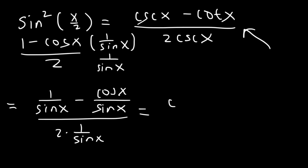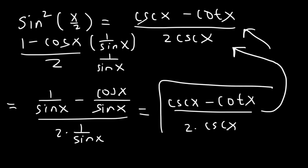1 over sine is cosecant. Cosine over sine is cotangent. And 2 times 1 over sine is 2 times cosecant. So now we've just verified the identity. And that's it for this problem.